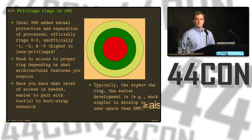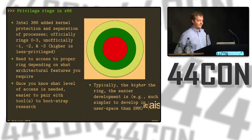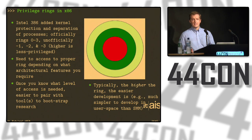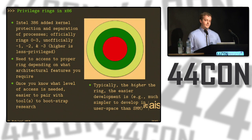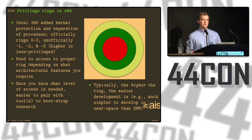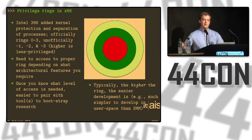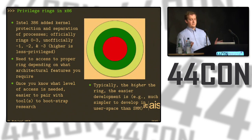The higher the ring number, the less privileged. So ring three is not better or more privileged than ring minus three. The reason I bring this up is that you want to know which ring you should be playing in and what level of access you'll need to do your work. The higher the ring, the easier it usually is — there are better APIs in ring three and user space, like fancy GUI libraries and networking code. If you're trying to write your own networking code in SMM, you'll probably have to write your own networking stack, so if you can do all that work in user space, it saves a lot of time.